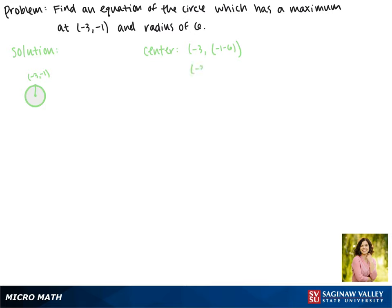So our center is the point negative 3, negative 7. And we already know that our radius is 6. So we can plug that into our equation.